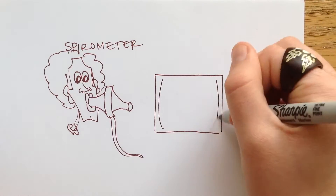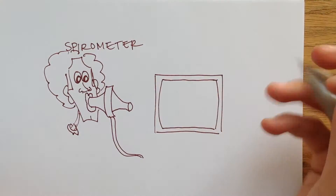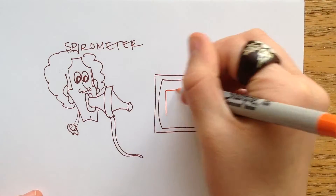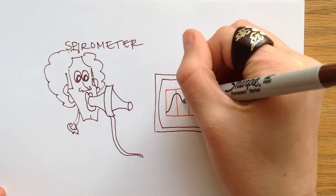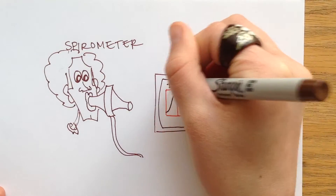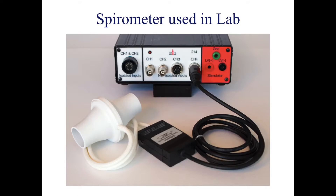The results will show waves going up and down — the peaks are showing the inhalation and the dips are showing the exhalation. Here is a picture of the spirometer that you will be using in your labs. Let's now go through the different lung volumes and capacities to help you understand what you are looking at as you use the spirometer.